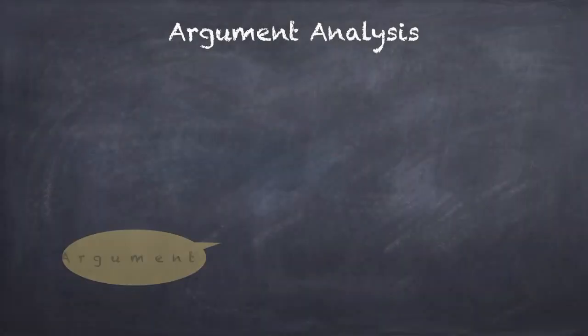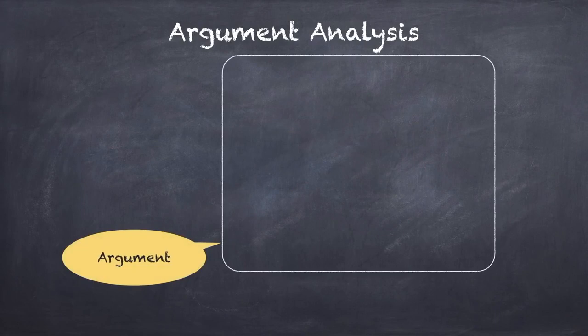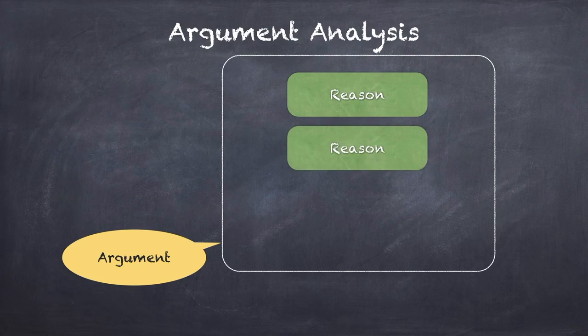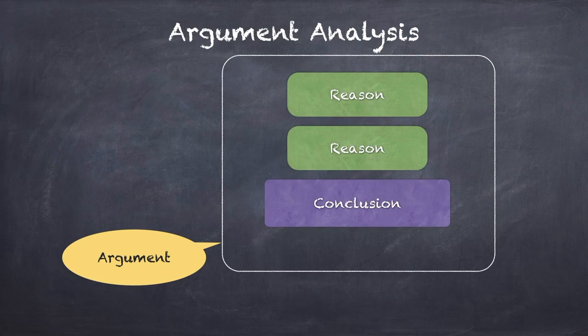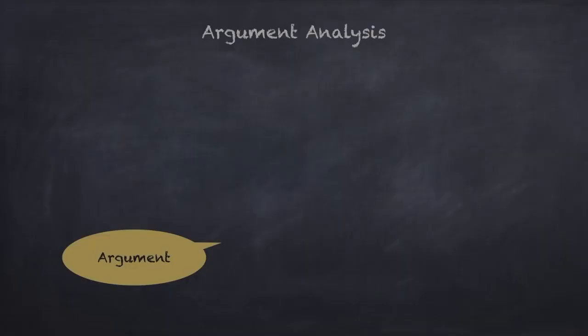Though we have covered it earlier, what is an argument? An argument is a reason leading to a conclusion. Some people call it a premise. So a premise adding up to a conclusion — these three statements together form an argument. Think of it as a box made up of reasons and conclusion. There could be multiple reasons also.